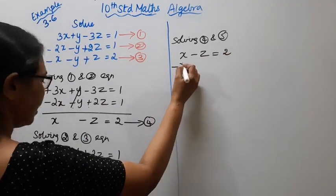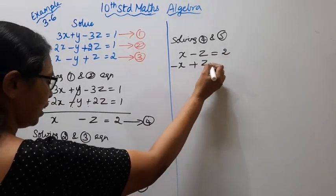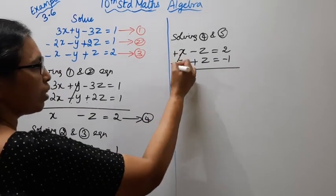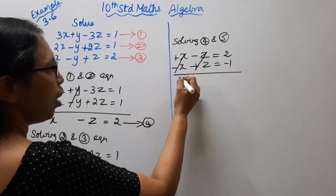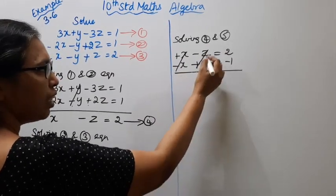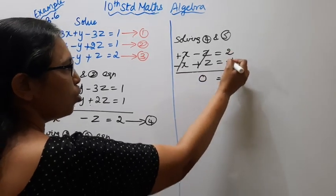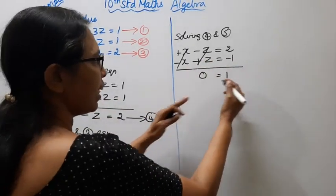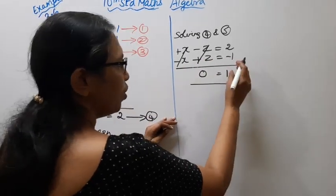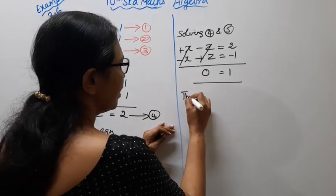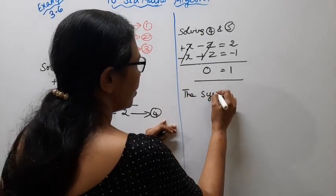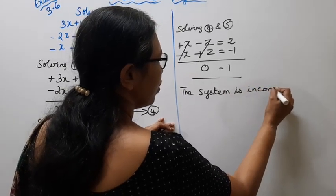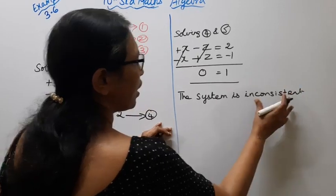Combining the fourth equation and the result: minus x plus x cancels, and minus z plus z cancels, leaving 0 equals minus 1. Since the left-hand side and right-hand side values are contradictory, the system is inconsistent.